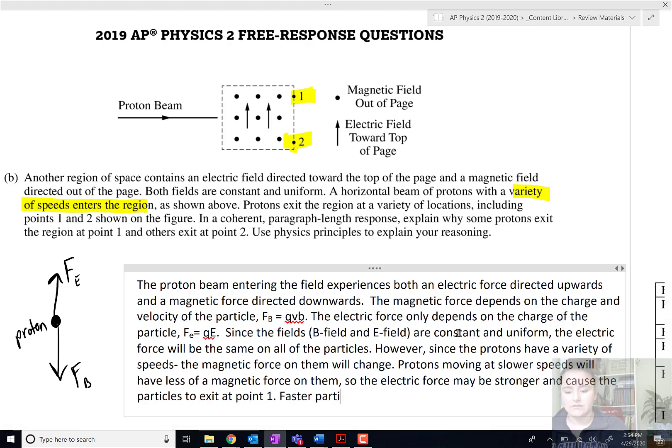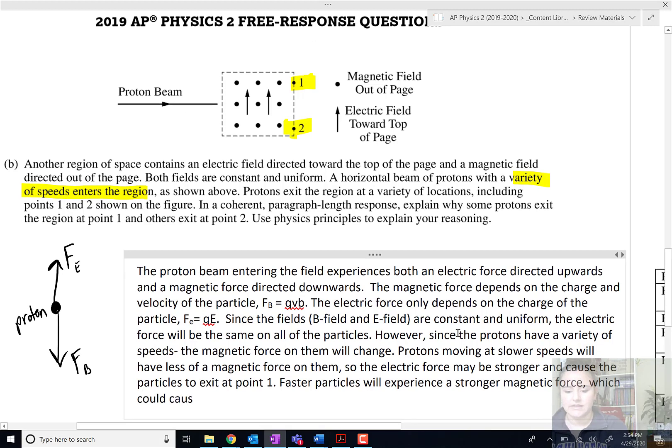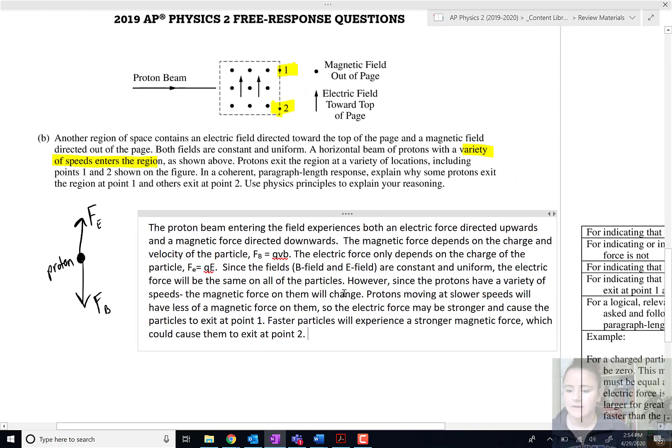Faster particles will experience a stronger magnetic force, which could cause them to exit at point two. So it said to explain why some exit at point one and exit at point two. I explained that the electric force is constant and that the magnetic force depends on the speed, comparing the speeds of the particle which place they will exit that field. Let's go ahead and see what the scoring guidelines have to say about my response.